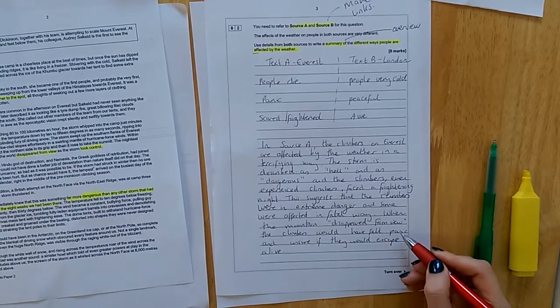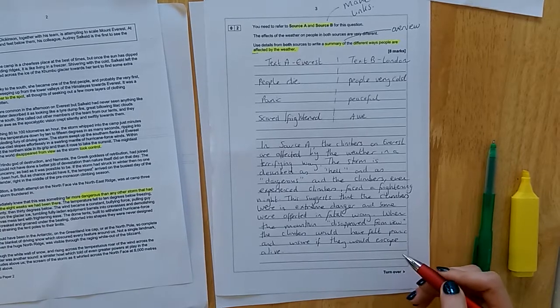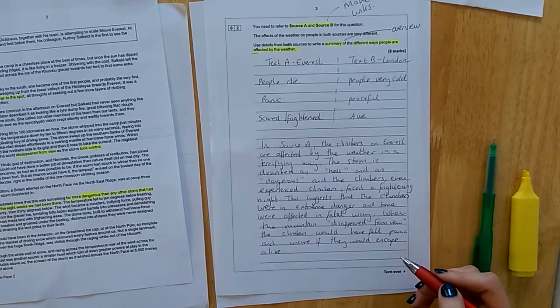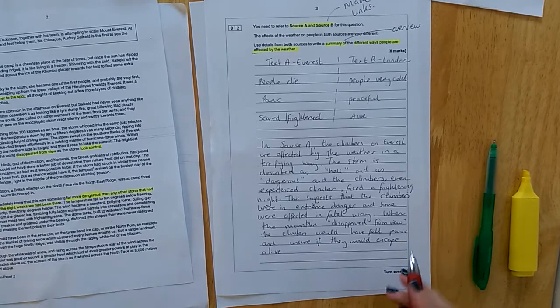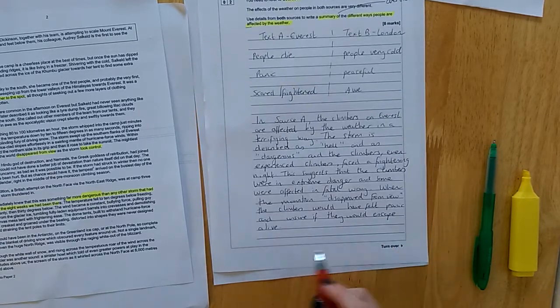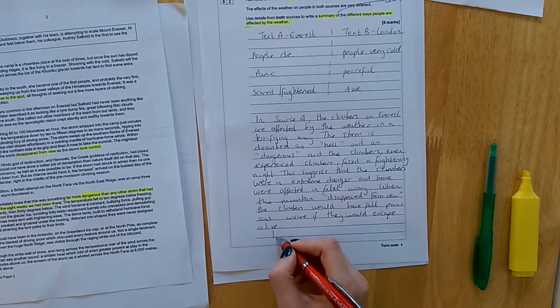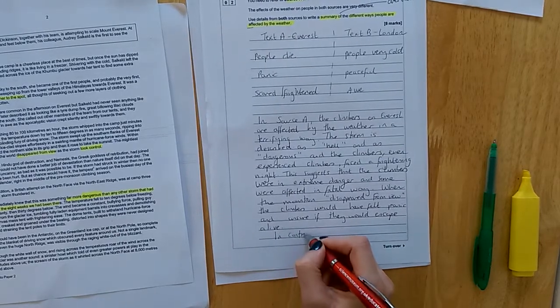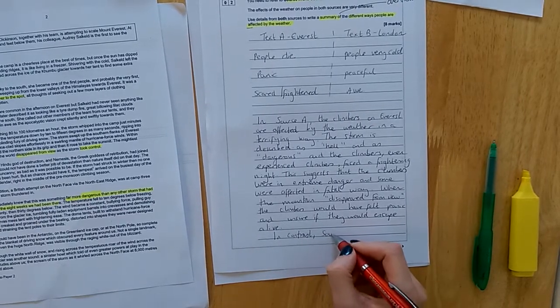Okay, so that is my inference. It doesn't say directly in the text that they're feeling panicked. I am inferring that from what the text does tell me. We now need to connect to source B. We need to use a discourse marker to show that we know the two texts are different. So I'm going to go with in contrast. Then, I summarise text B.